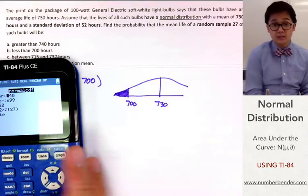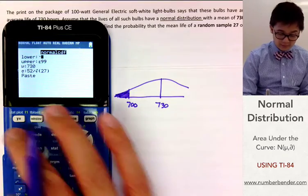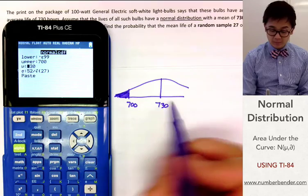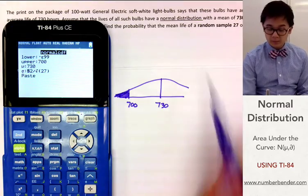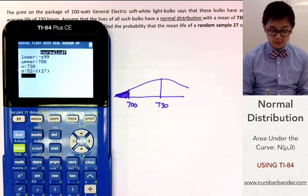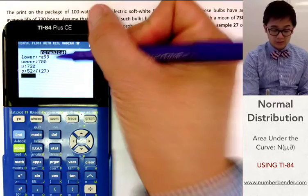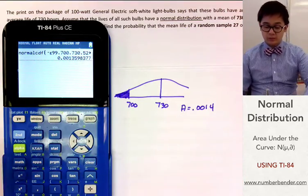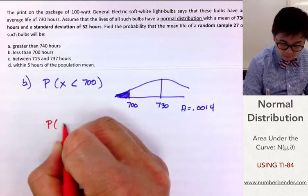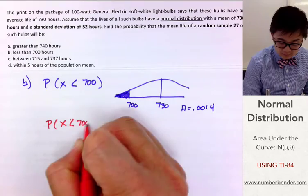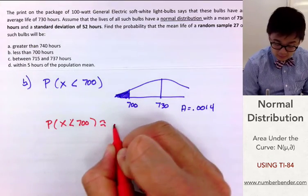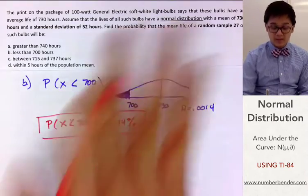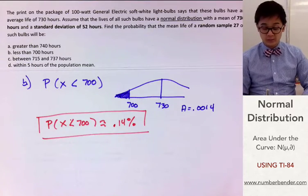Using the TI-84: 2nd, Vars, Normal CDF. The lower limit is now negative infinity, represented as negative E99. The upper value is 700, the mean is 730, and the standard deviation is still 52 divided by the square root of 27. We're not changing the mean or standard deviation — just the lower and upper values. The calculator gives us 0.0014. So the probability that the average lifespan is less than 700 hours is approximately 0.14% — not even 1%.